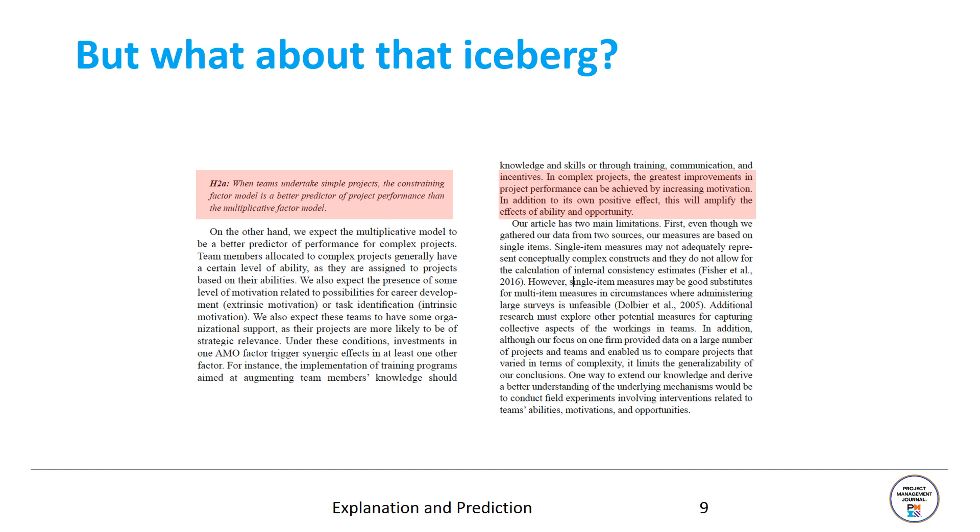When you actually closely read this, you will notice that these are actually predictive statements. In the hypothesis, the authors talk about prediction. That's a better predictor of project performance. In the discussion of the managerial implications, they also engage in predictive statements in that they foreshadow a certain event. This will happen if companies do this. This activity will amplify the effects of ability and opportunity. So this is a predictive statement. It foreshadows what will happen if the company does something.